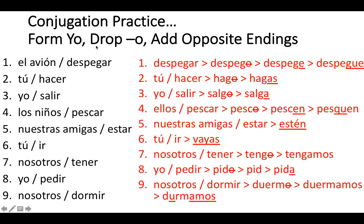For -car verbs: 'los niños pescar' — form yo 'pesco,' drop the o, AR verb so add EN for third person plural, but it's the subjunctive so we add EN — and since it's a -car verb, C changes to QU: you get 'pesquen.' Similarly, 'el avión despegar': 'despegar' is a -gar verb — form yo 'despego,' drop the o, add opposite ending E for the él form, but -gar verbs change G to GU: you get 'despegue.'